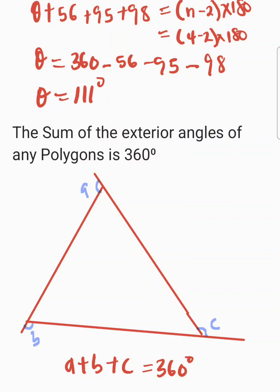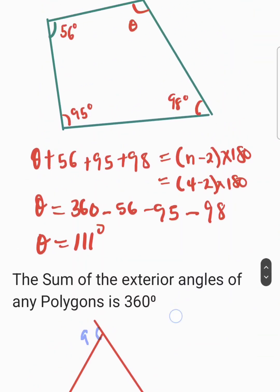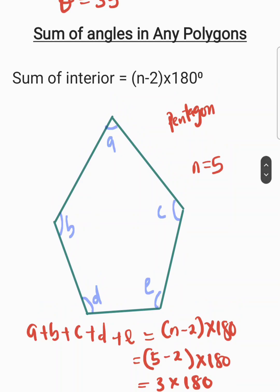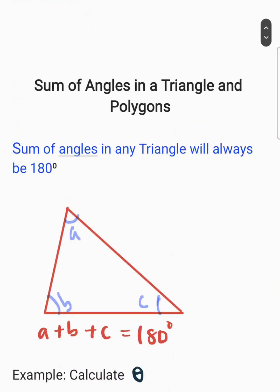We've covered three rules today. Rule 3: the sum of exterior angles of any polygon is 360 degrees. Rule 2: the sum of interior angles equals n minus 2 multiplied by 180 degrees. Rule 1: the sum of angles in any triangle will always be 180 degrees. Thank you for watching. To follow more on geometry, subscribe to this channel and share this video. See you next time.